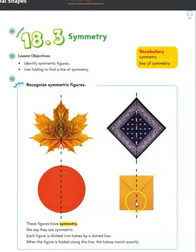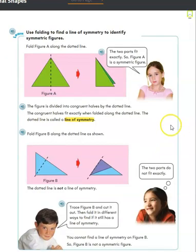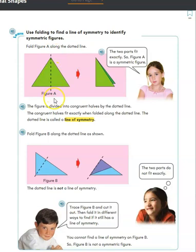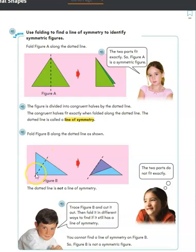These shapes have lines of symmetry. This green triangle — if we were to draw a dotted line right in the middle and fold it over, the two parts would fit exactly. That would be the line of symmetry, making this a symmetric figure. Down here, if we put the dotted line and fold this shape over, that would not be a line of symmetry because it's not exactly in the middle.